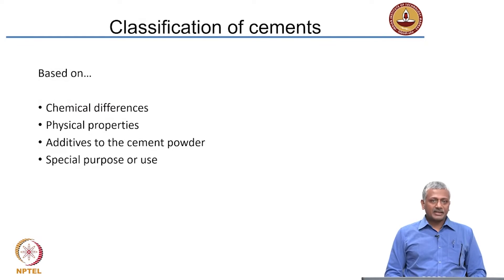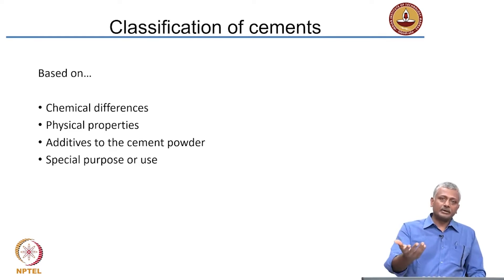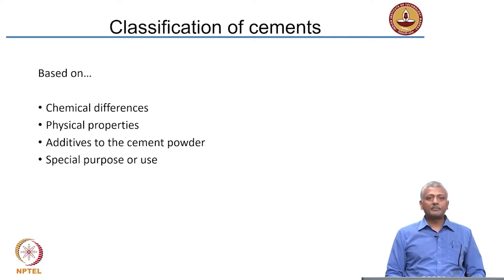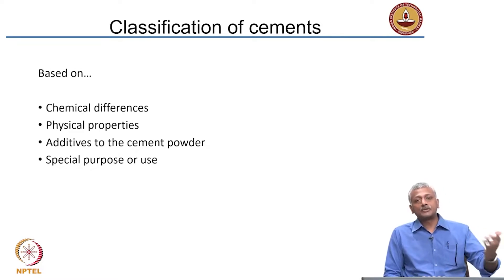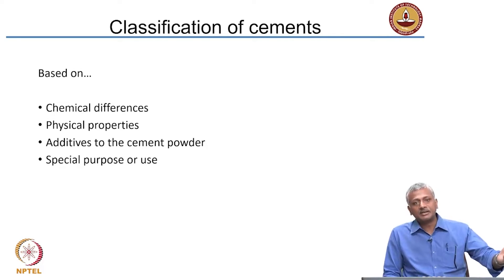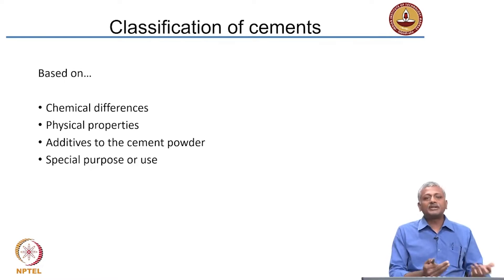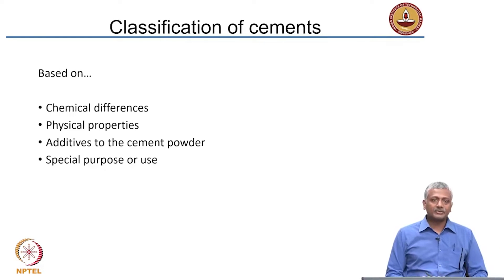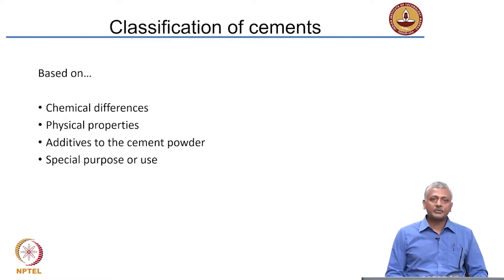Let us look at how cements can be classified. These are sometimes used in different applications. I already told you the example of using cement in a column in a high-rise building versus using the same cement in a dam. You need different characteristics for different applications, and because of that, you sometimes have to define cement of different types which can be employed for specific applications.